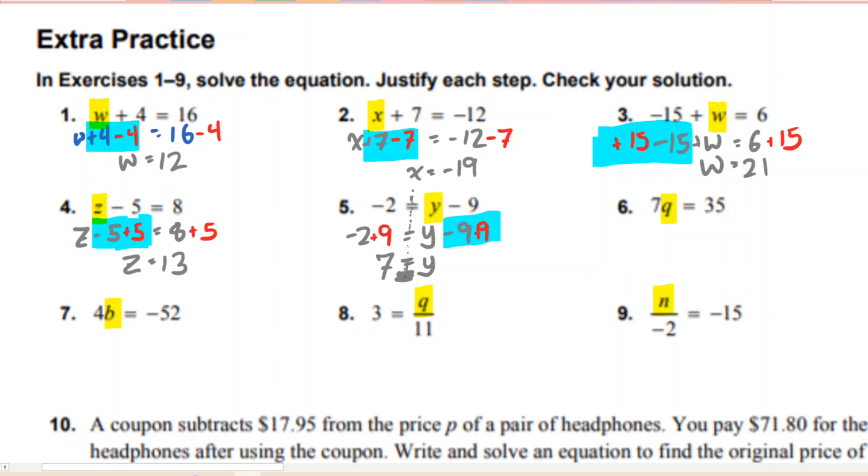If you wanted to check that, you could just start off again with what we have. It says Y minus 9. If I'm saying Y is 7, then if I did 7 minus 9, I should get a negative 2. And, oh look, I did.